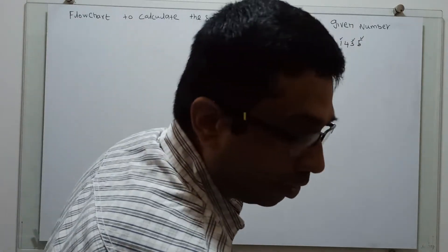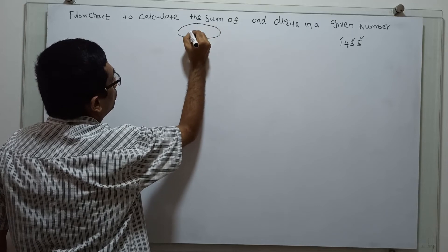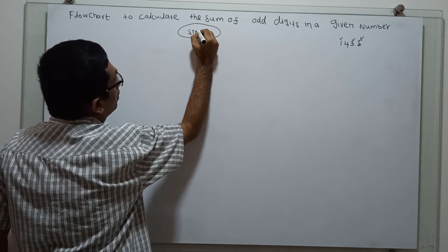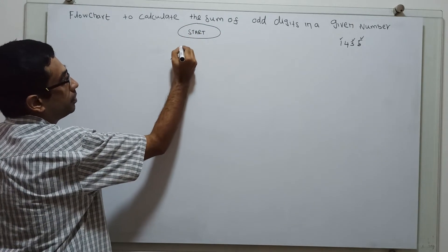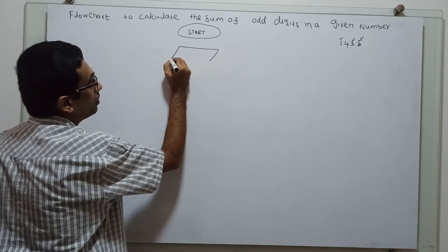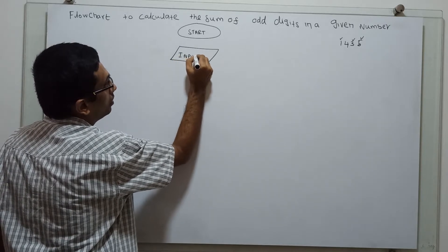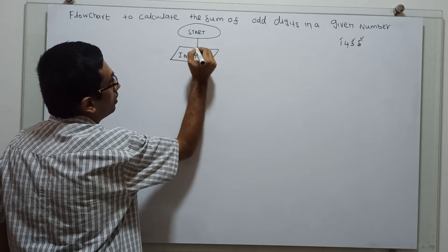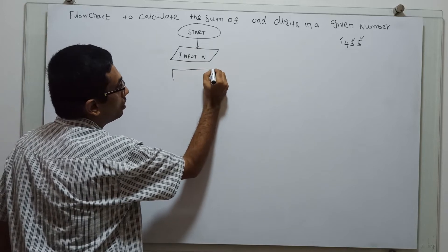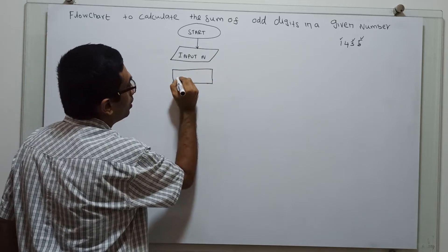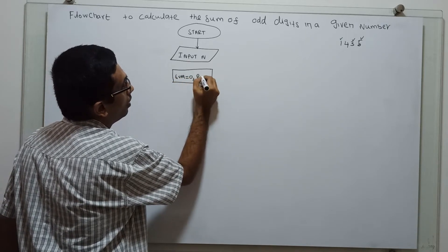So we will go to the flowchart. Start. Next, we have to obtain a number from the user. A parallelogram is for the input symbol, so input n. And I am initializing two variables: sum equal to 0 and R equal to 0.